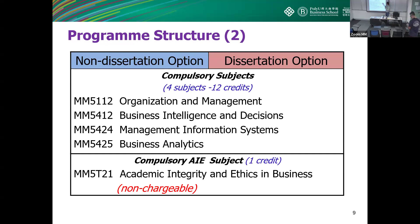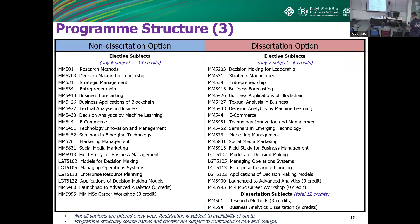The program structure consists of four core courses and the compulsory academic integrity and ethics course, which is a one-credit course. For the electives there are quite a number of choices — we have business forecasting, blockchain, textual analysis, and more. It's all up to your interests, and you can use these electives to develop your career.